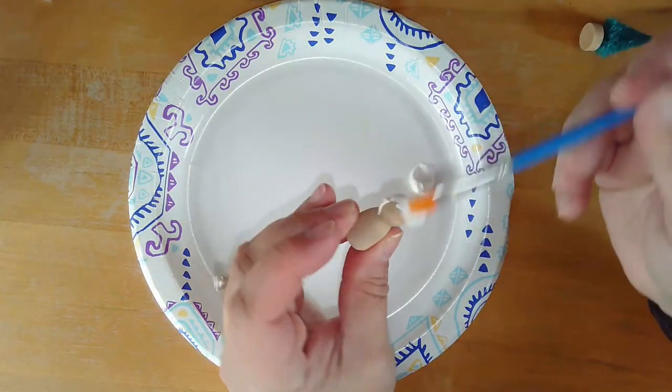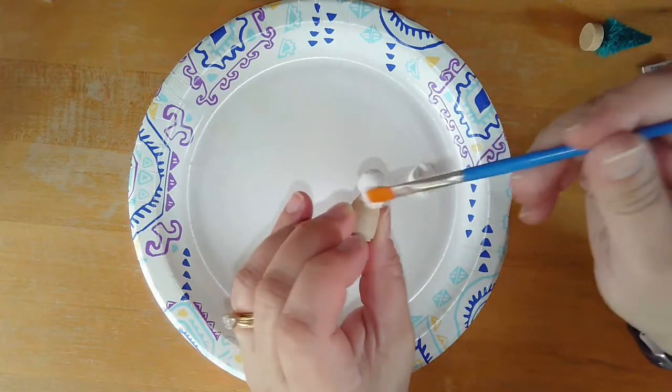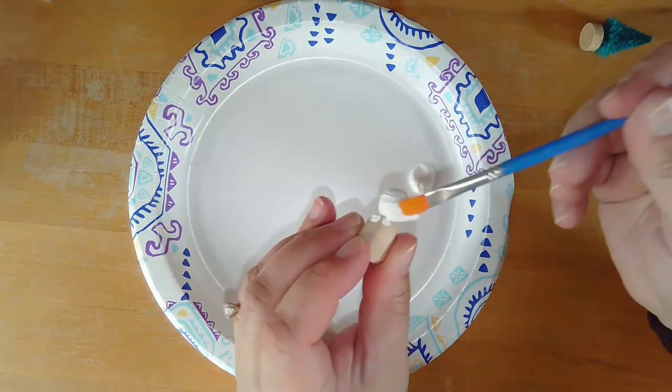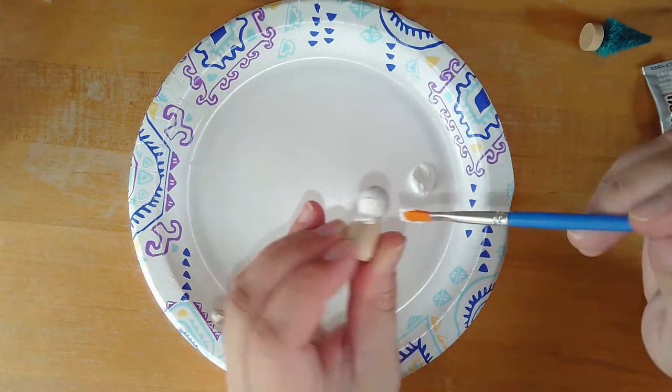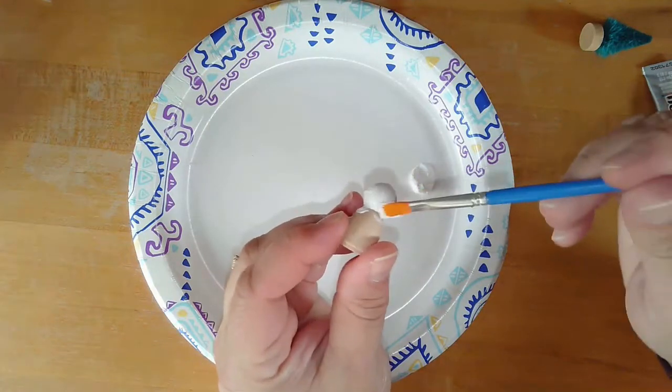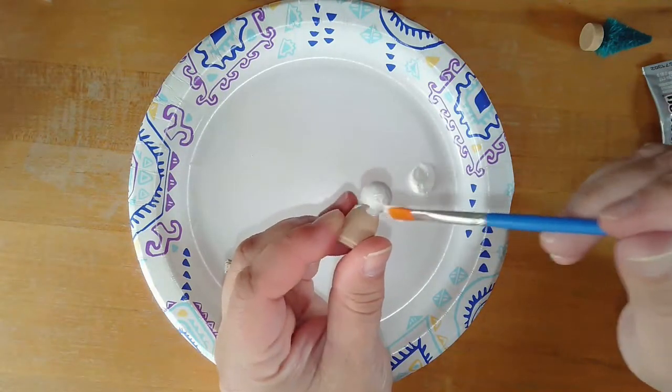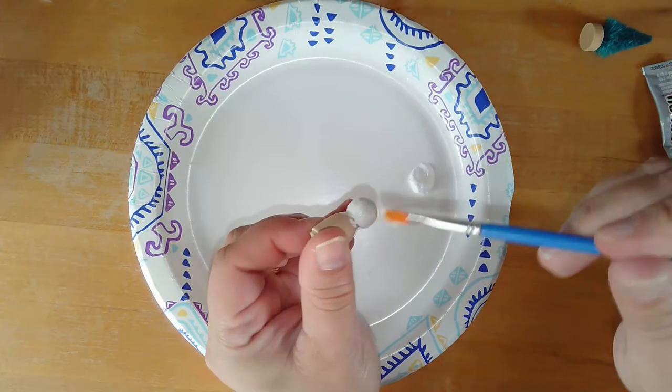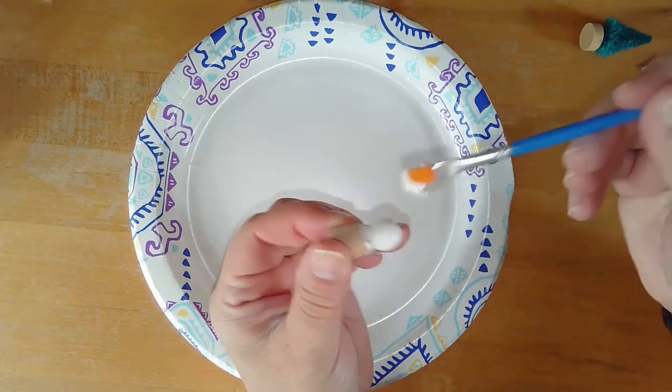You want to put an even layer of white paint all the way around, making sure you get good coverage. If you want some texture, you can kind of make it gloppy, but then it's going to take longer to dry. You need to make sure everything is covered.